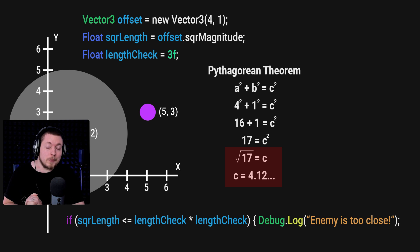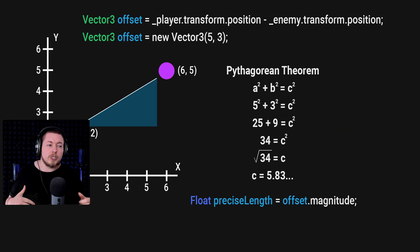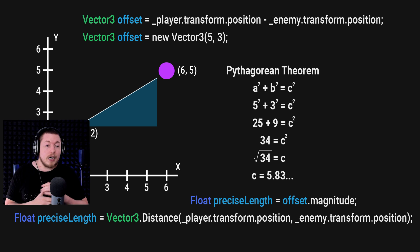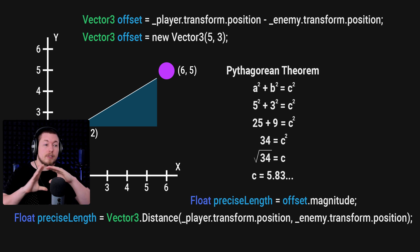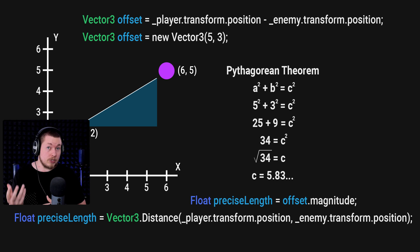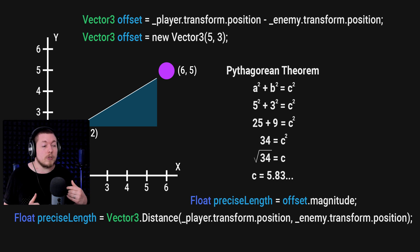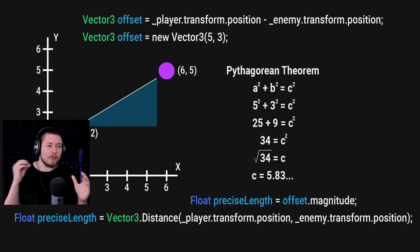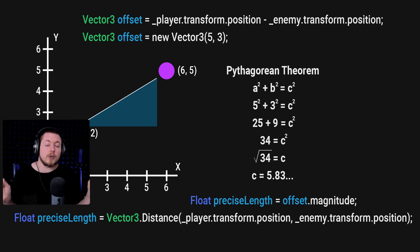Before we end, there's one other way to calculate the magnitude besides dot magnitude. Instead of creating an offset variable and using offset.magnitude, you can skip the offset entirely and use Vector3.Distance, passing in the player's position as the first parameter and the enemy's position as the second. It's essentially a matter of preference — either get the offset first and then calculate the magnitude, or use Vector3.Distance directly as a single expression.